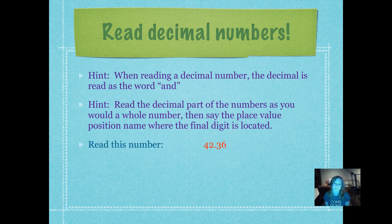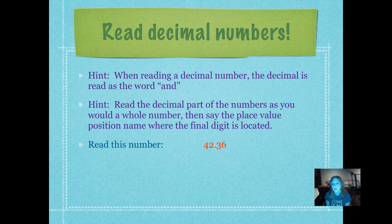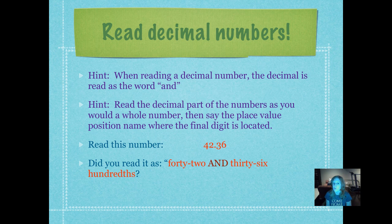If you're reading this number — you would read 42. You read the whole number side just the same. The decimal, you say 'and,' so you would say '42 and.' Then the 36 that comes after the decimal ends in the hundredths place. If you sing the song starting at the decimal and working your way to the right: decimal, tenths, hundredths — see, the 6 ended in the hundredths place. So you would read that part of the number '36 hundredths.' Did you read it as '42 and 36 hundredths'? If you did, you're picking up on this pretty quickly.